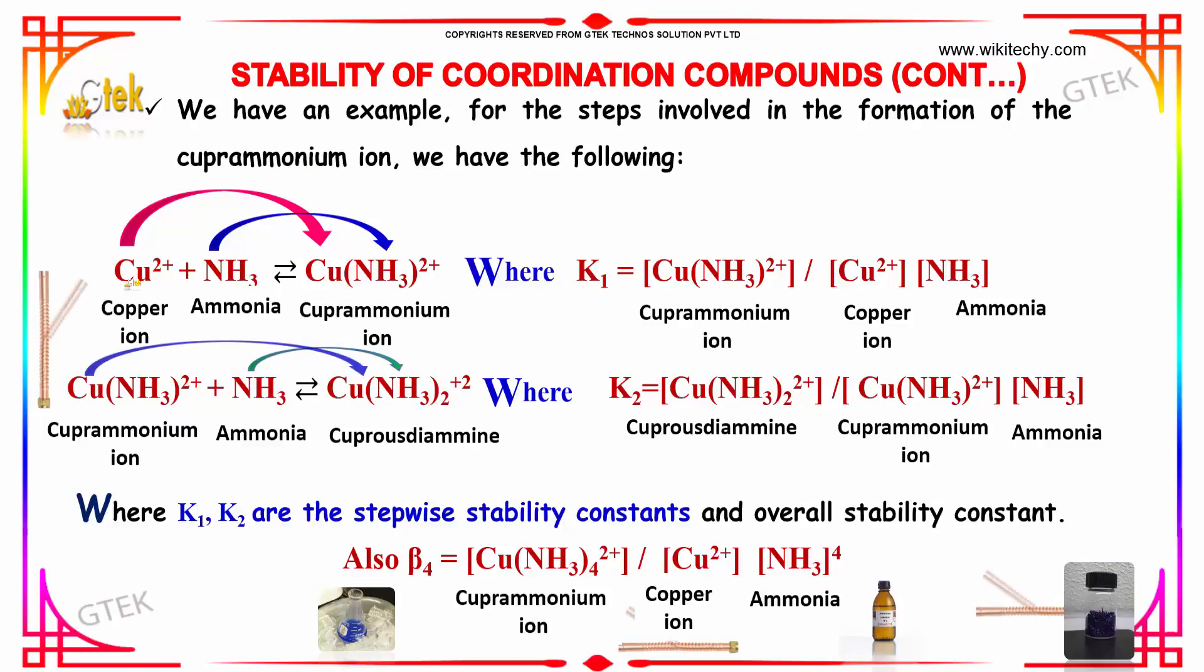This is the equation. You got your copper 2 plus ion. Copper ion mixed with ammonia will provide you copper ammonium ion. Where K1 is equal to Cu(NH3)2+ divided by Cu2+ into NH3.